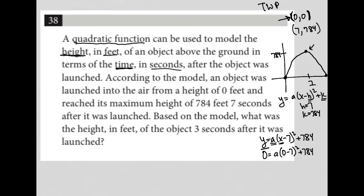So I am going to subtract 784 from both sides. So I get negative 784 equals, and now 0 minus 7 is negative 7. Negative 7 to the second power is 49, so I get 49a.